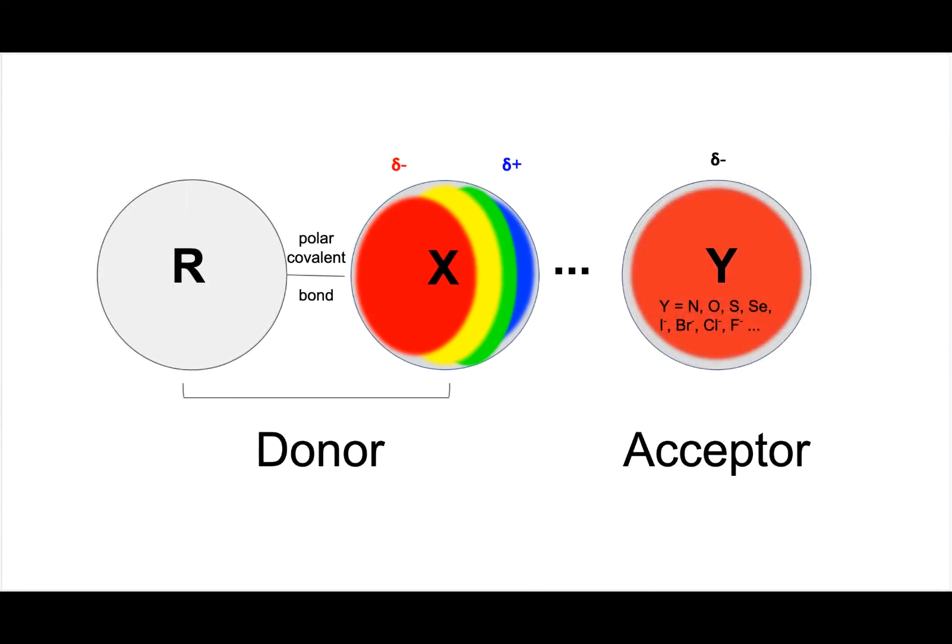When a nucleophile or electron-rich atom is positioned close to the sigma hole, it functions as the halogen bond acceptor.